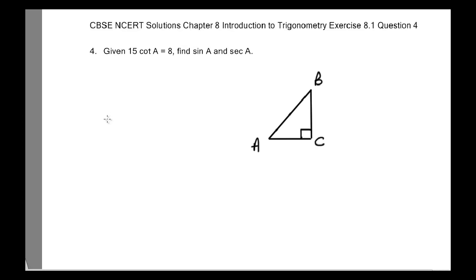This is CBSE and CRD Solutions, Chapter 8: Introduction to Trigonometry, Exercise 8.1, Question Number 4. The problem given to us is that 15 times cotangent of A is equal to 8, and we need to find sine of A and secant of A. From the given information, we will proceed to the solution.